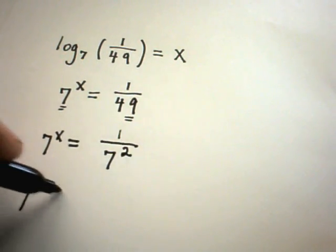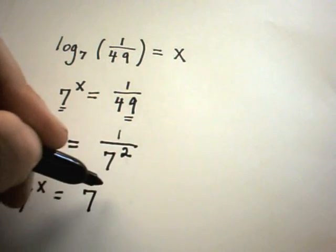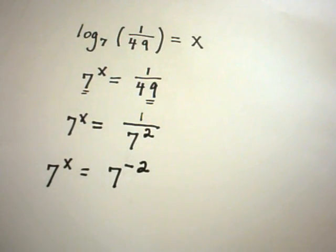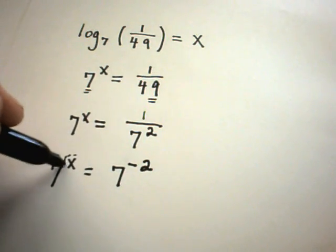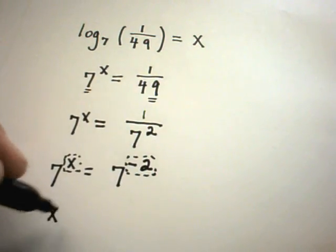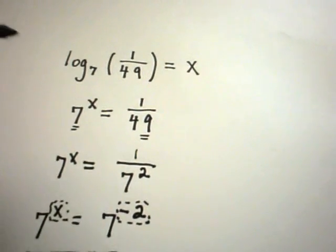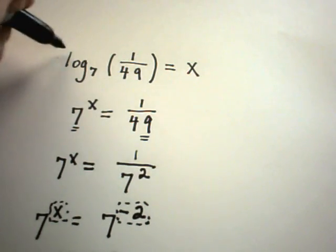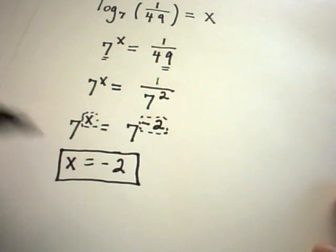And then, remember by property of exponents, I can bring the 7 to the numerator of the fraction, but then I have to change the sign on the exponent. But, now I have what I need. It says 7 raised to the x has to equal 7 raised to the negative 2. Well, that must mean that the powers have to be equal. So, we get simply that x equals negative 2 in this case. So, just like before, log base 7 of 1 over 49, this is just some number. And, it's just a fancy way, again, of writing the number, in this case, negative 2.